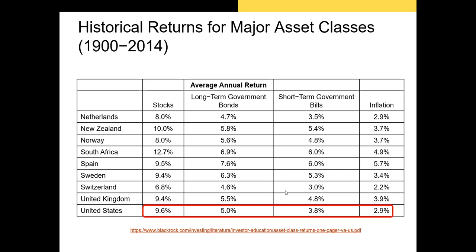We've already discussed the fact that investors demand higher returns when they're investing in riskier securities. Stocks outperform bonds because stock prices are more volatile than bond prices, and investors demand a higher return before they're willing to invest in those volatile stocks. Long-term bonds outperform short-term bonds because the probability of default between now and maturity is higher for bonds that have a longer time to maturity.